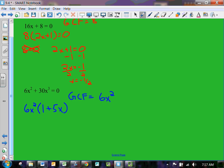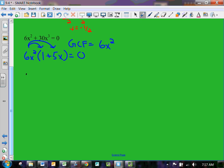I always like to kind of redistribute this in my head, so saying six x squared times one gives me six x squared, six x squared times five x gives me thirty x to the third, so that's right. And this equals zero. So what we can do then is solve both of these and say six x squared equals zero because that would be our A, or one plus five x equals zero.